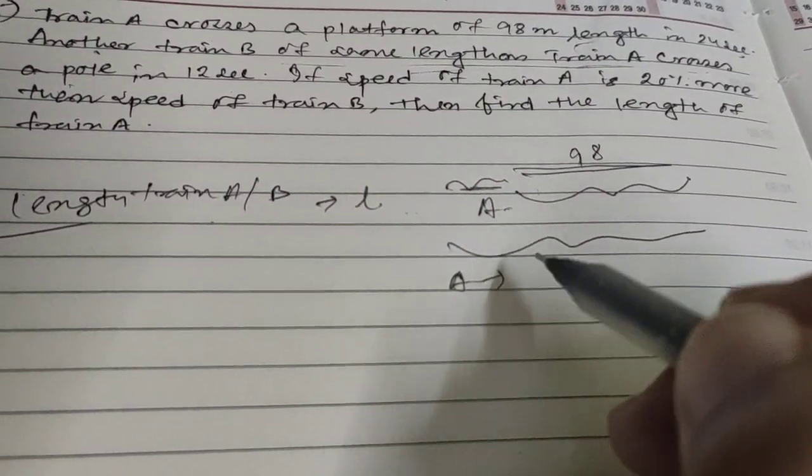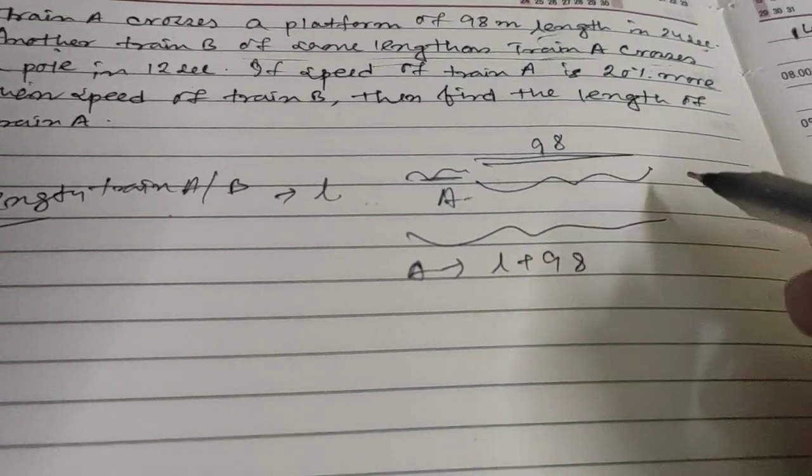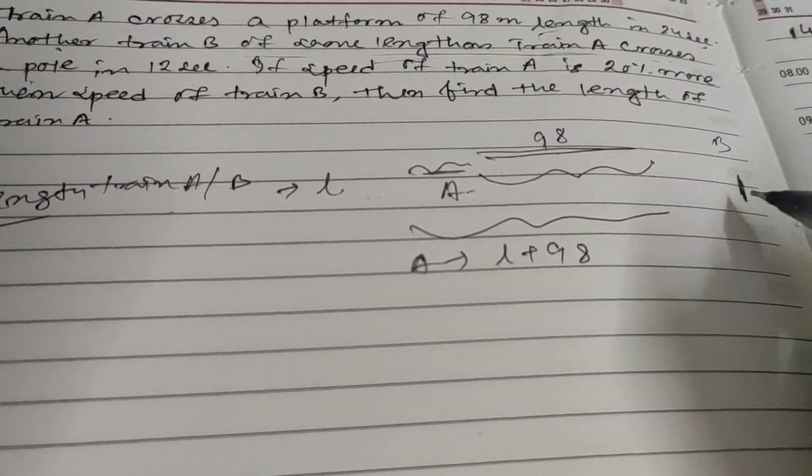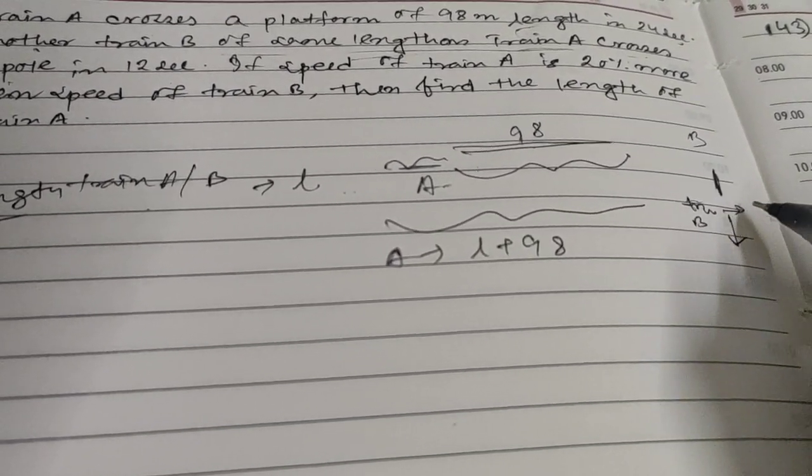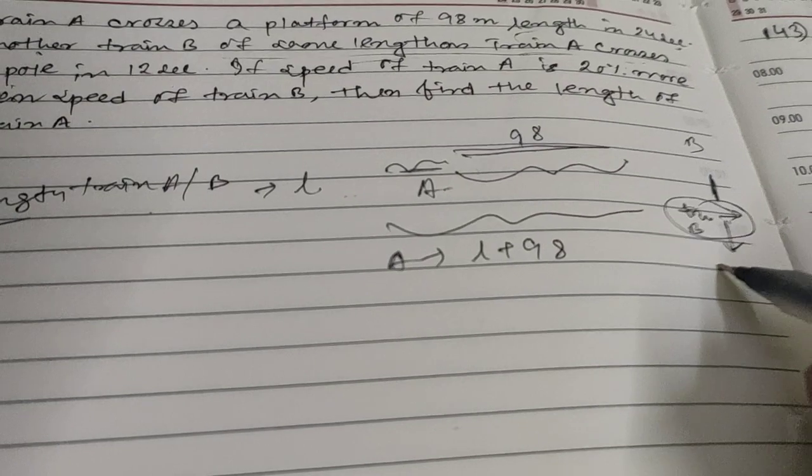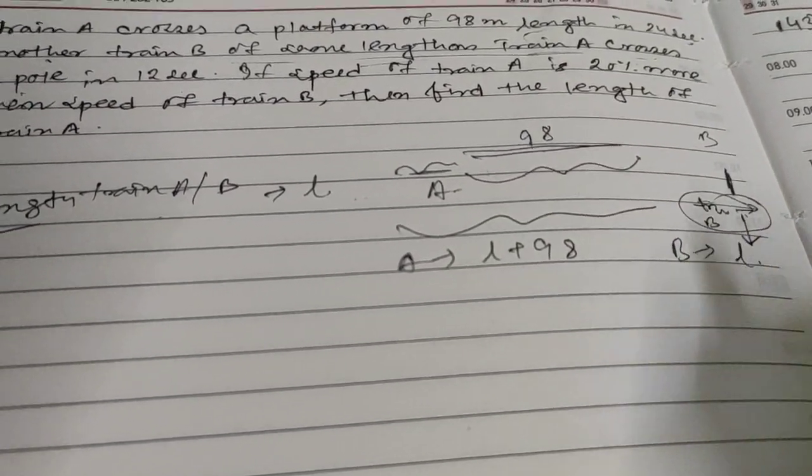For train B, this is a pole, so the total length covered will be the length of the train only, which is L. So length that B covered is L.